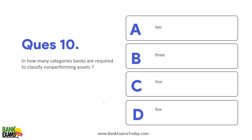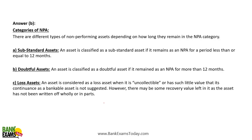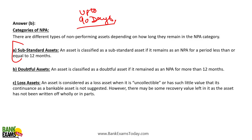In how many categories are banks required to classify non-performing assets? Three categories: substandard assets, doubtful assets, and loss assets. Up to 90 days an asset remains a performing asset; after 90 days till 12 months it becomes a substandard asset; from 90 days to one year it is substandard; after one year the bank may mark it as a loss asset.